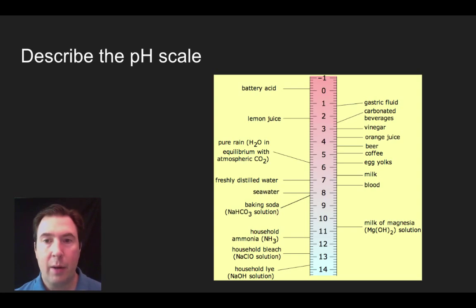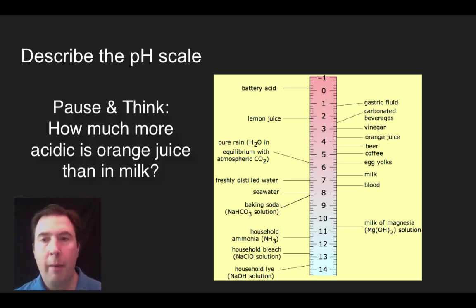So let's do another example here, and let's pick out a couple of substances on here. So for example, let's start and talk about milk versus orange juice. So how much more hydrogens, or how many more hydrogens are going to be given off in solution, or how much more acidic is orange juice than milk? Why don't you pause and think?